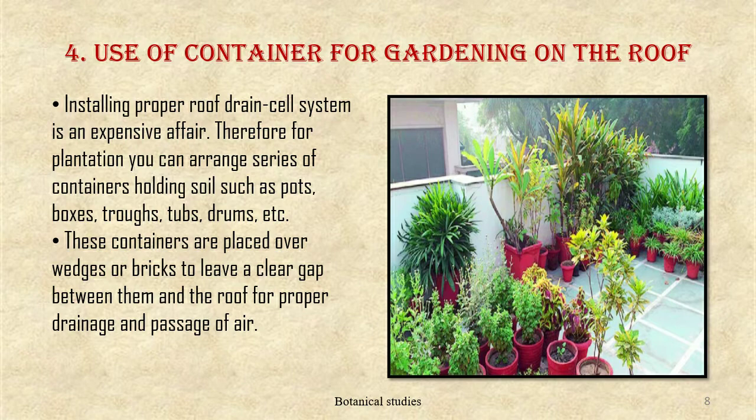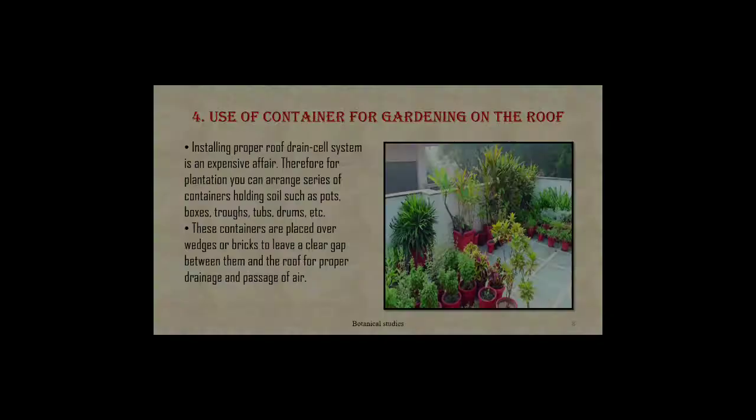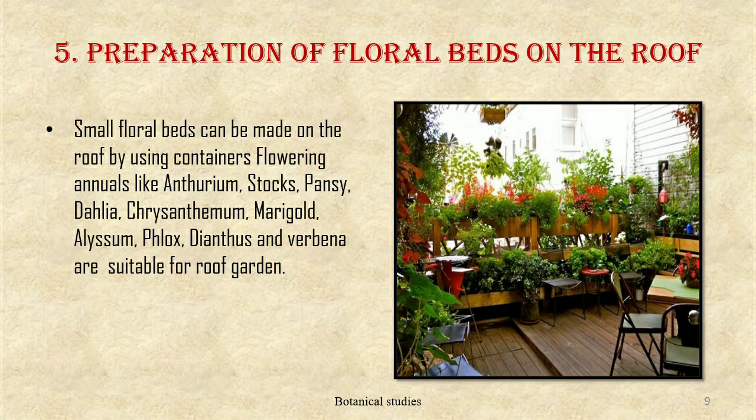Fourth, use of containers — installing a proper roof drain cell system is an expensive affair; therefore for plantation you can arrange a series of containers holding soil such as pots, boxes, tubs, and drums. These containers are placed over wedges or bricks to leave a clear gap between them and the roof for proper drainage and passage of air.